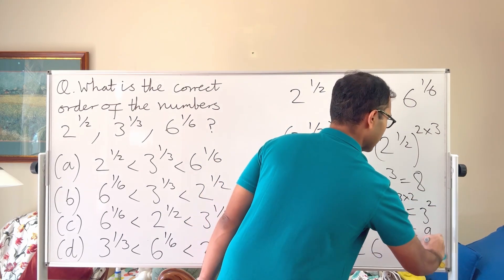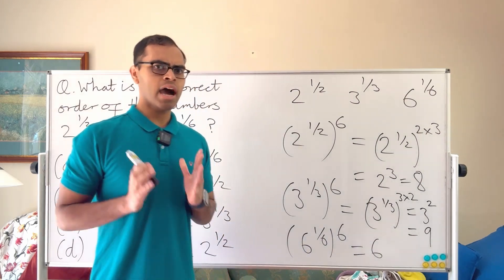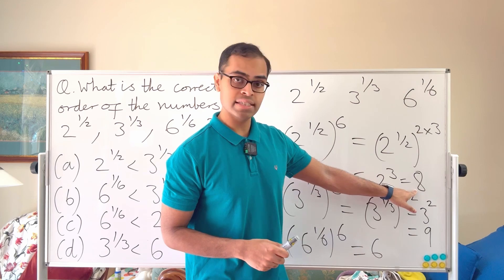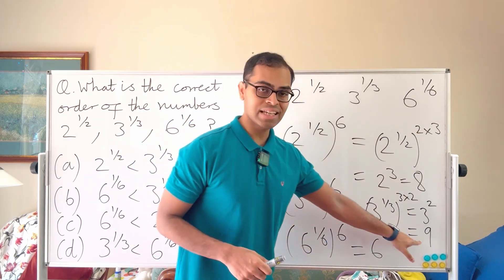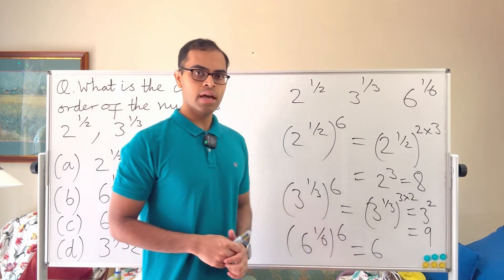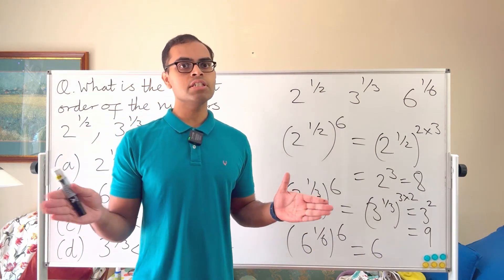Now why is this interesting and how do we explain this? Because here what we see is that 2 power half power 6 is 8, 3 power one third power 6 is 9, so it increases but then it drops back down to 6. And because the order of the numbers doesn't change when we only power by 6, the correct order for these numbers is going to be 2 power half is less than 3 power one over three which in turn is greater than 6 power one over six.